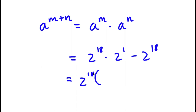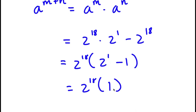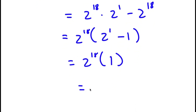So I have 2 to the power of 18 times — 2 to the power of 1 divided by 2 to the power of 18 is simply 2 to the power of 1 — and negative 2 to the power of 18 divided by 2 to the power of 18 is simply negative 1. This gives 2 to the power of 18 times 2 to the power of 1, which is 2, and 2 minus 1 is 1. So 2 to the power of 18 times 1 is simply 2 to the power of 18.